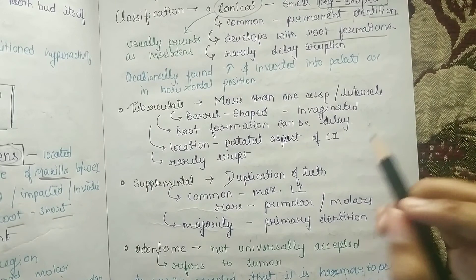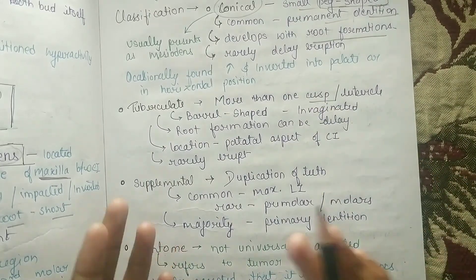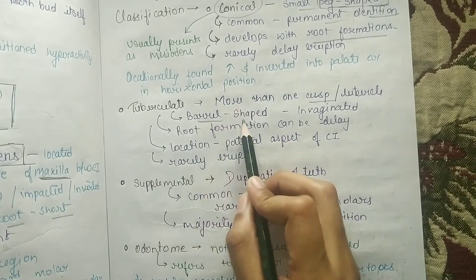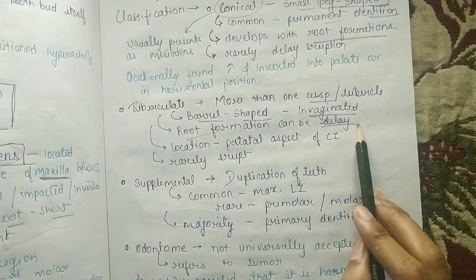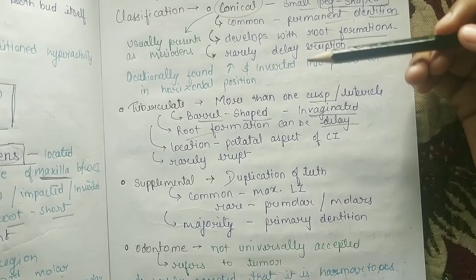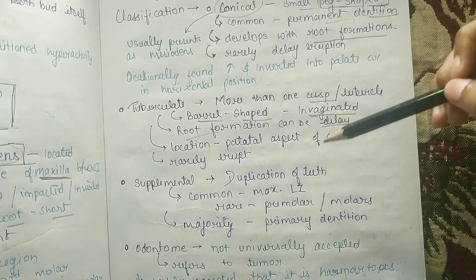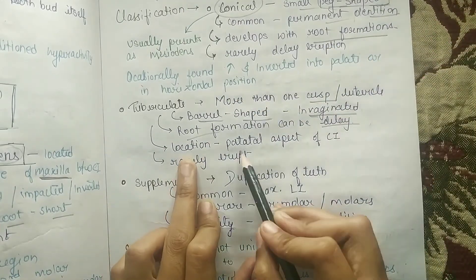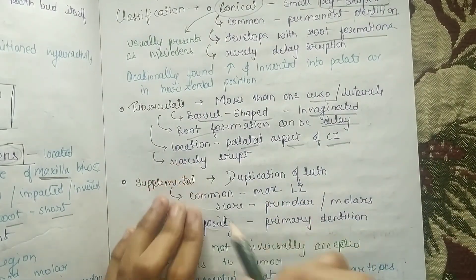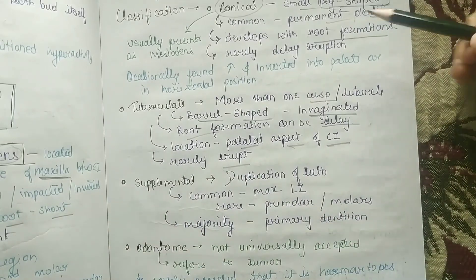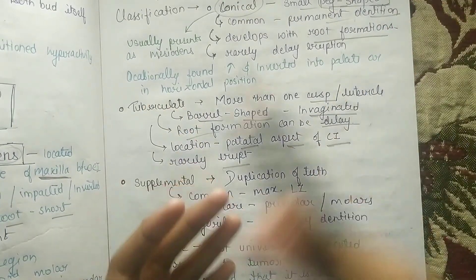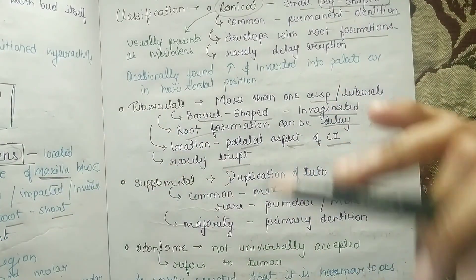Tuberculate has more than one cusp present — it is barrel-shaped. Unlike conical, root formation is delayed in tuberculate. Its location is the palatal aspect of the central incisor. It rarely erupts, and eruption can be delayed with no guarantee it will erupt.